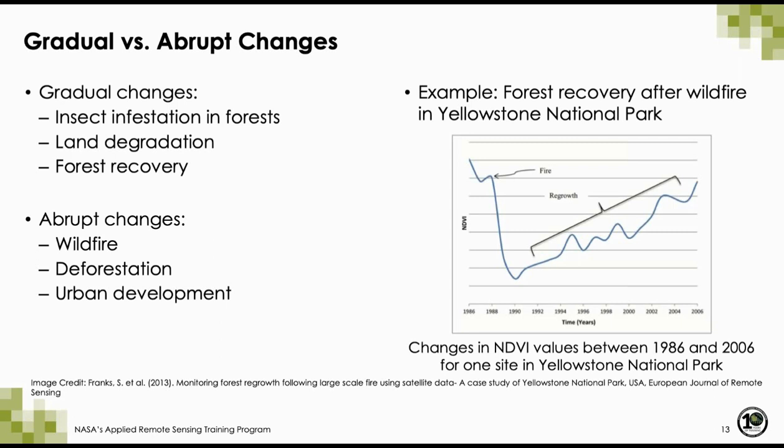Satellite Earth observations can be used for analyzing gradual changes like insect infestation in forests, land degradation, and forest recovery, or for abrupt changes due to events like wildfire, deforestation, and urban development. The graph on the right shows both abrupt and gradual changes that occur in forests: a wildfire causes an abrupt decrease in NDVI values, while subsequent regrowth results in increasing NDVI values over a long time period.